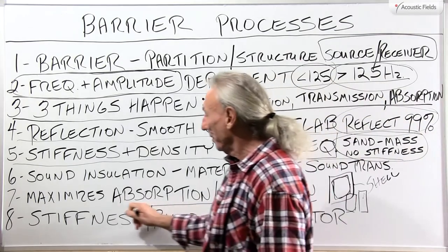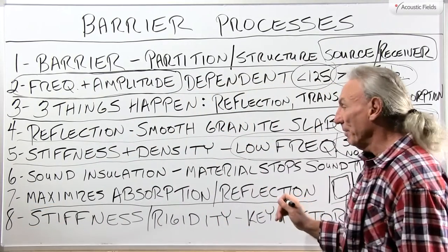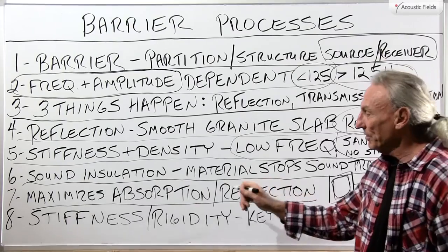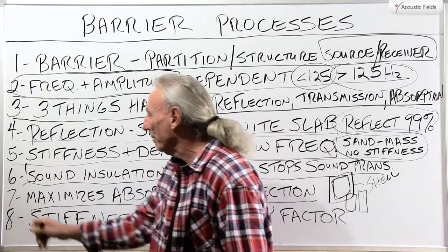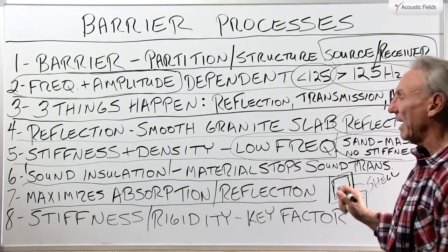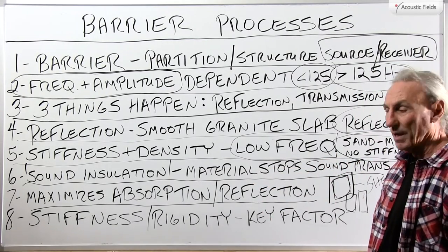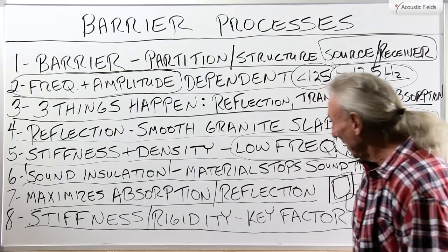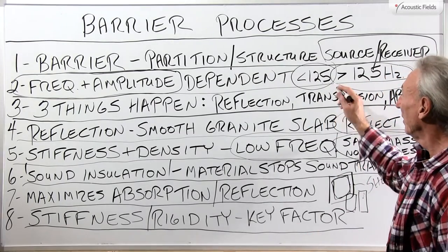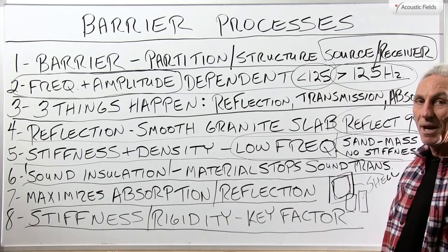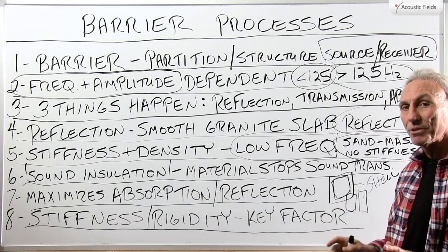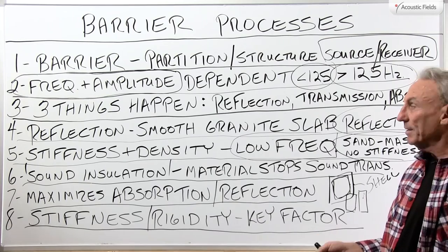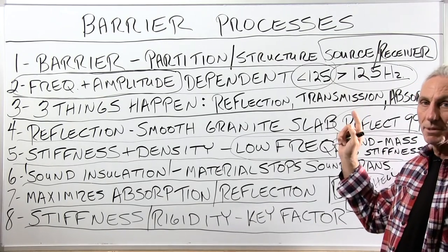So what are we doing with this? We're maximizing absorption and reflection with our barrier. Here's a term you see a lot — sound insulation. It usually relates to material that stops the actual transmission through the structure. Keep this in mind: stiffness and rigidity are your key factors in any barrier. Quantifying and qualifying the frequencies and amplitudes you're dealing with — the only way to do this is to measure over seven days, three measurements a day. Then we get an average of what we're up against and build the barrier to suit the numbers, not the other way around.